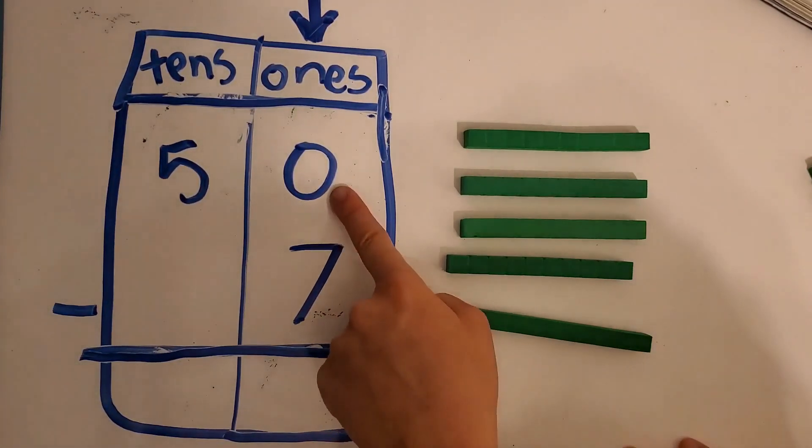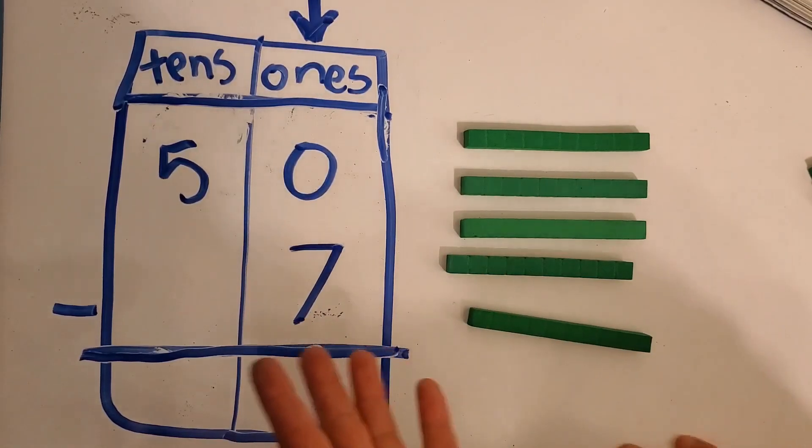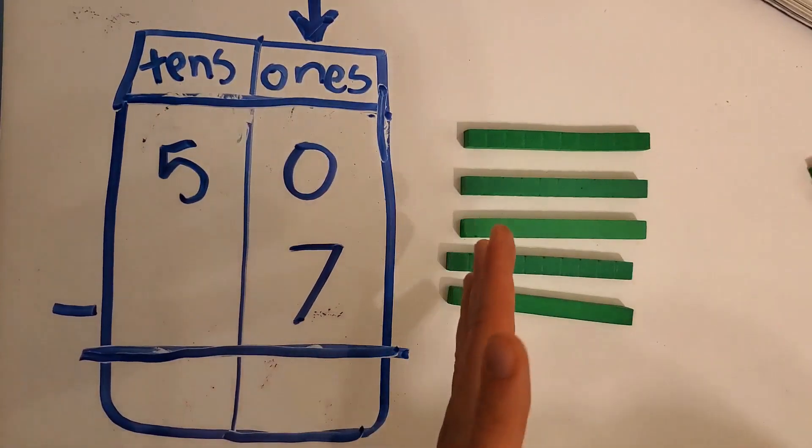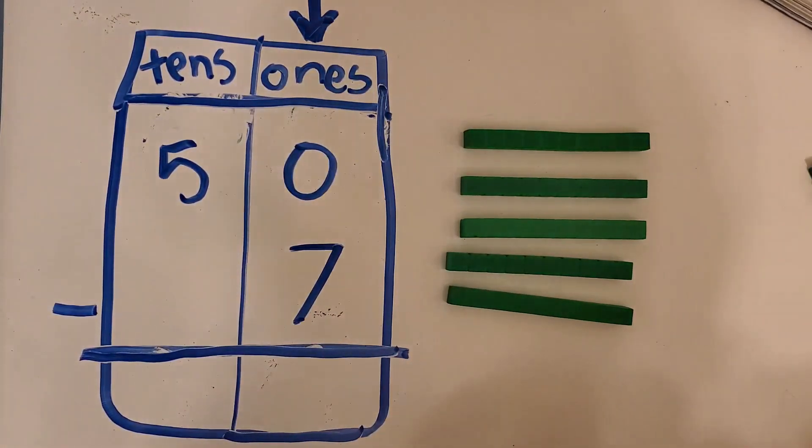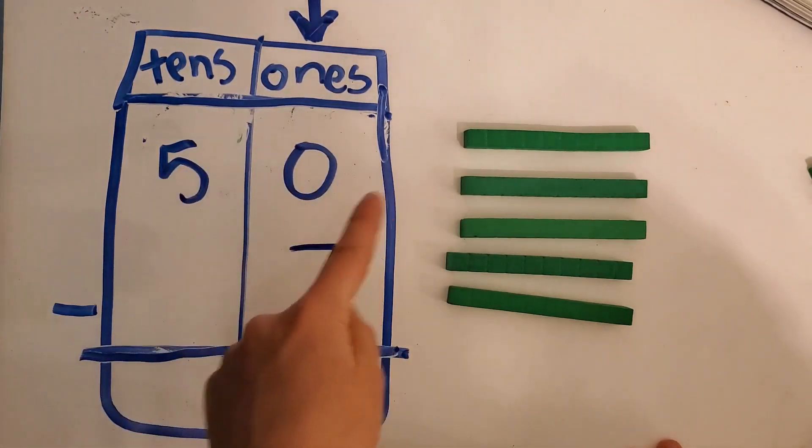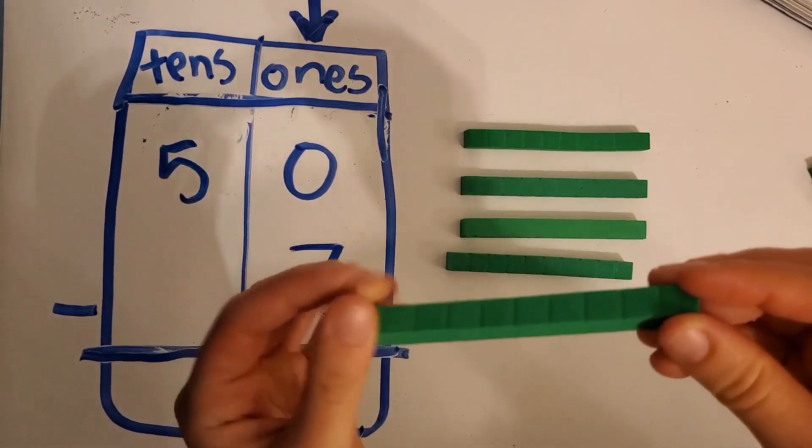Well, we have zero ones. Let's take away seven. Can I take away seven ones? No, I can't take away seven ones because there are no ones. There are zero ones. So we have to make zero ones, but we can't change the value of fifty. We can't change the value. So then we have to trade this one ten for ten ones.